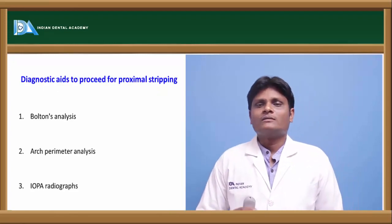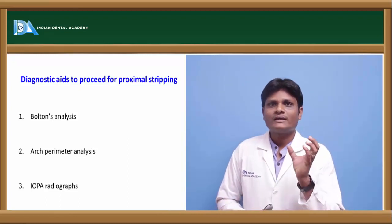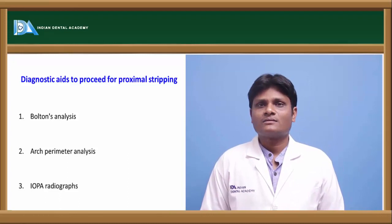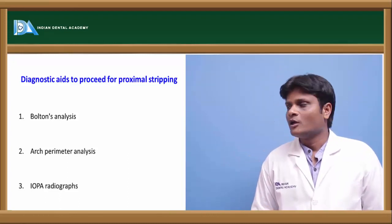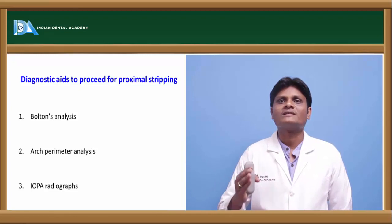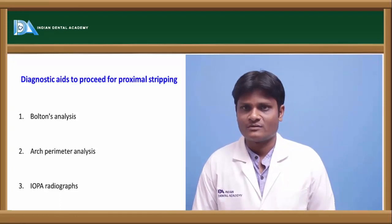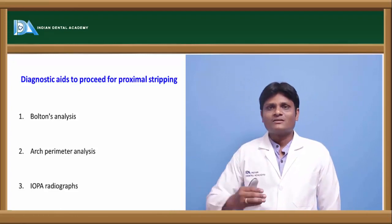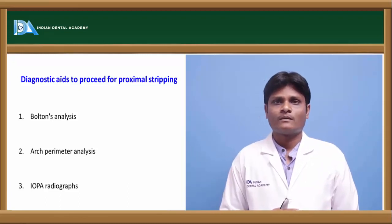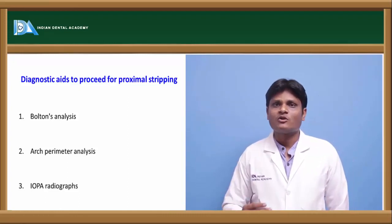Before proceeding with proximal stripping, a careful analysis of the study models is required. We should perform careful Bolton's tooth size discrepancy analysis and arch perimeter analysis to find out the amount of excess tooth material. We should also obtain intraoral periapical radiographs to finalize whether we can effectively obtain the required space by proximal stripping. If this analysis is done incorrectly, you will end up making a wrong decision.